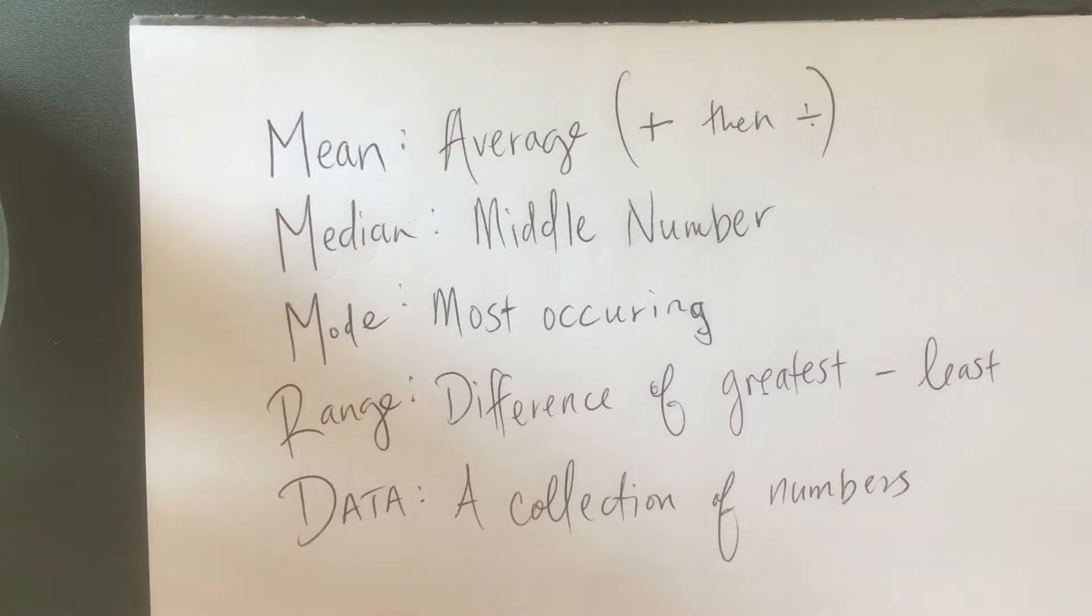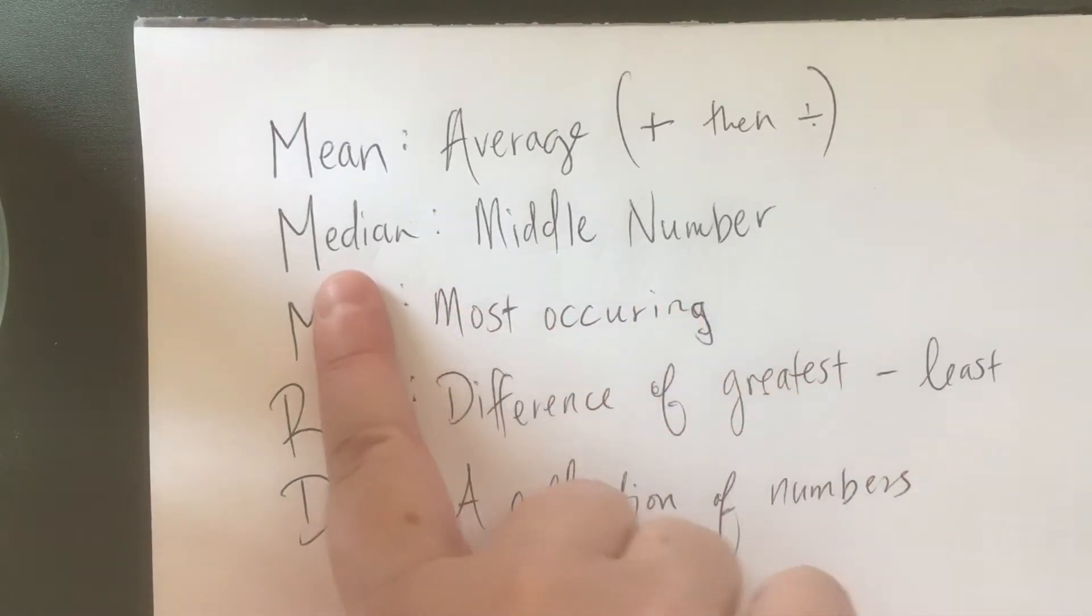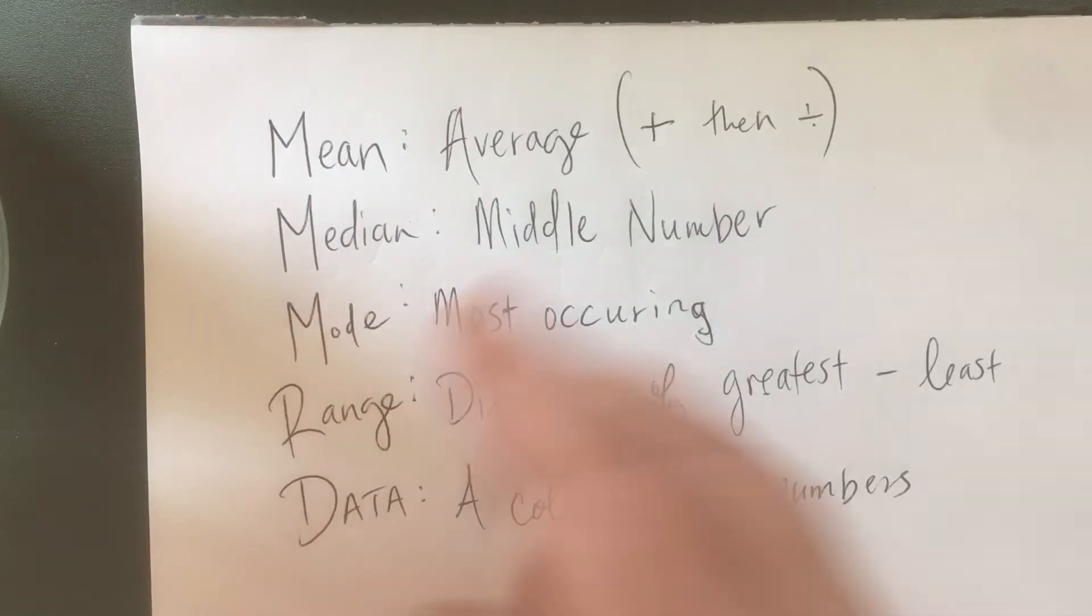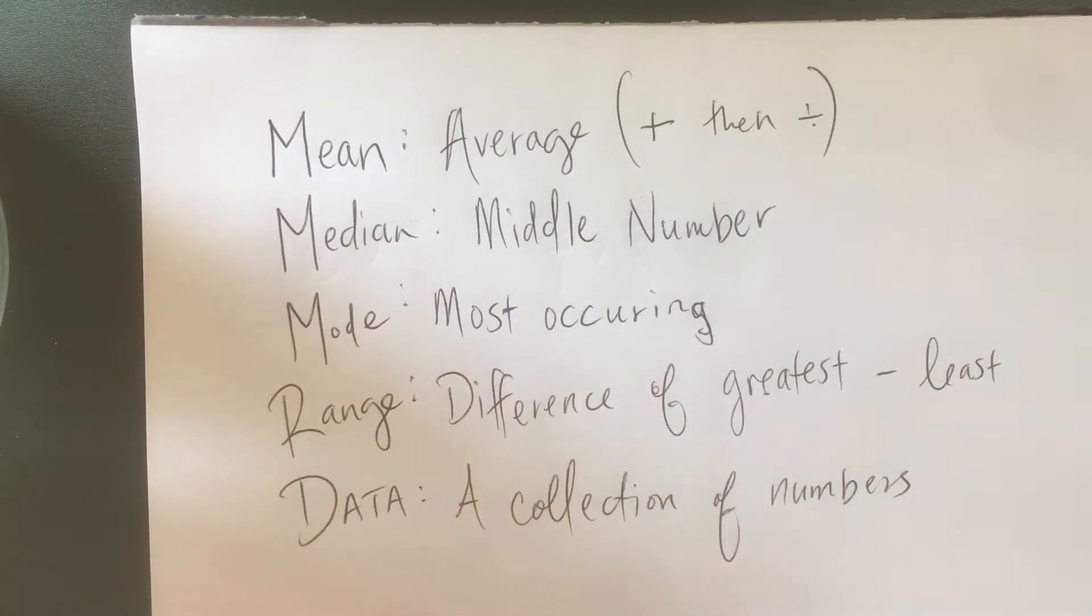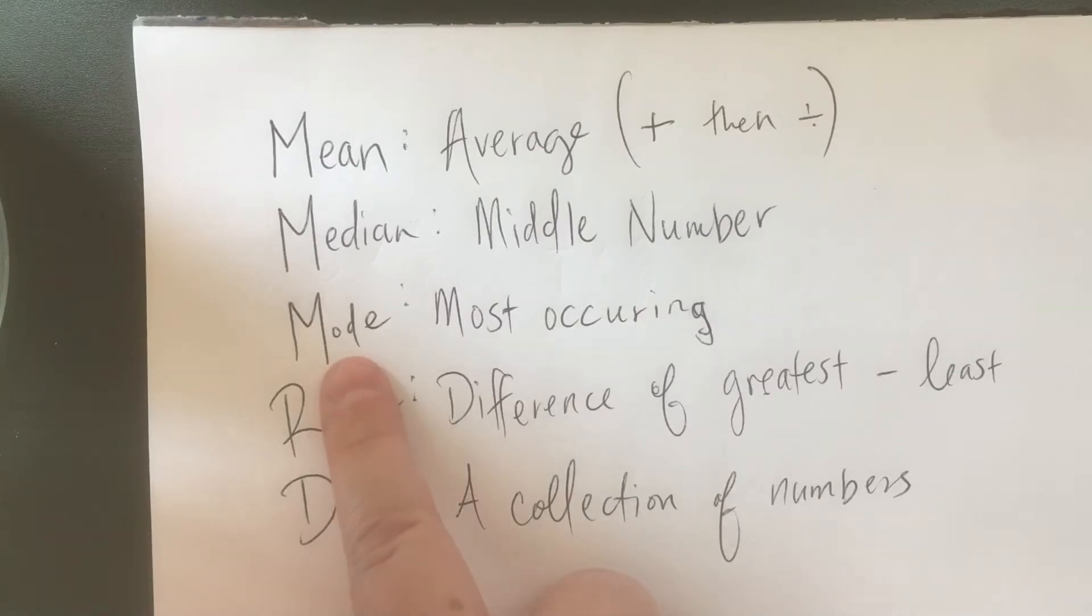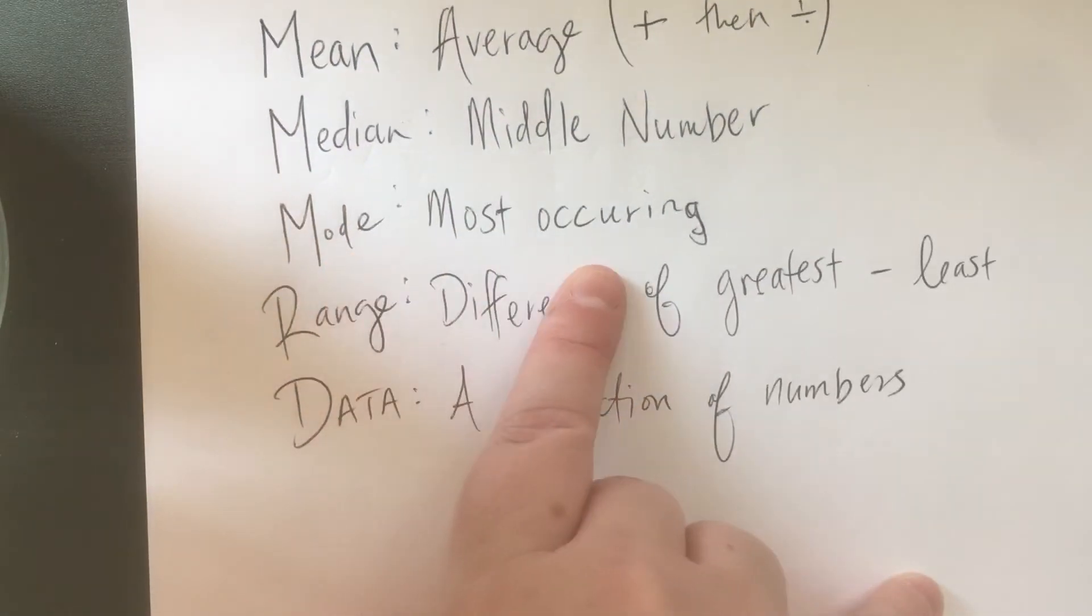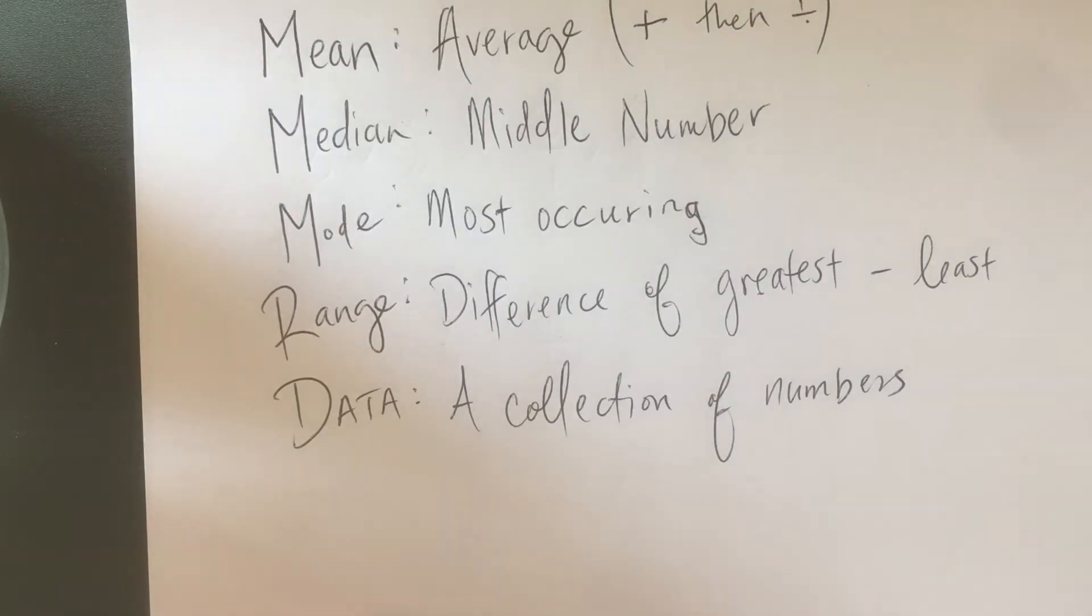The next one is the median - if we put the numbers in order from least to greatest, what is that middle number? The mode is the most occurring - the number that shows up the most. And the range is the difference from the greatest number to the least number. We are going to practice these terms today.